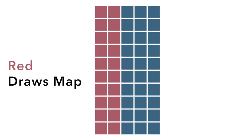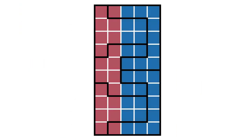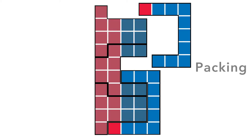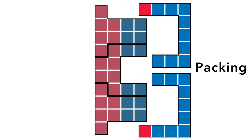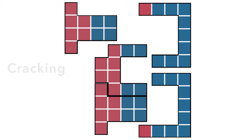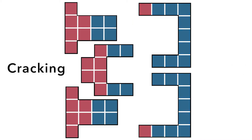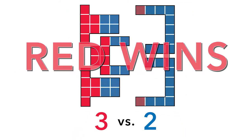How do you gerrymander? How do you make the outcome unfair to one party? You take the disfavored party's voters and you pack them into a few districts where they might be 80 or 90 percent blue. Or cracking — you spread them out so that they have lots of voters in each of the districts, but never quite enough to carry the district.